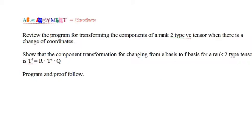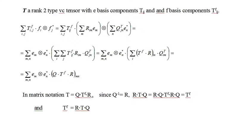The assignment is to review each part of the derivation. You might also want to try to derive the component transformation matrices for a rank 2 type VC tensor for a coordinate change, and try to write the program for graphing the stress and strain rate tensors as the coordinate frame is rotated, as we did in the video. The derivation and the program are given below.